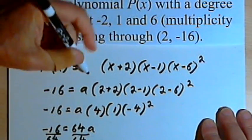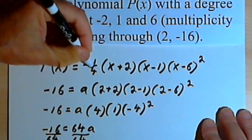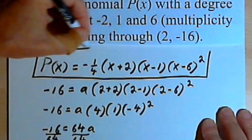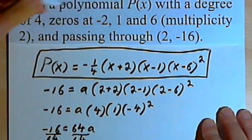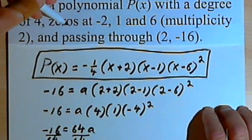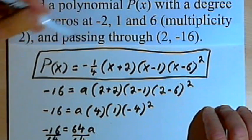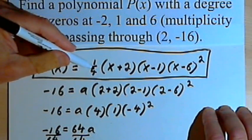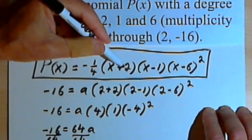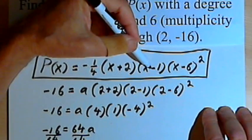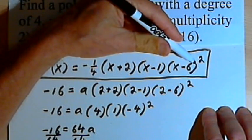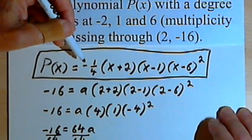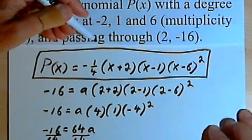Instead of a, I'll put in negative 1 quarter. So that means that the function that meets these requirements, that has these zeros and passes through this point, is going to be P(x) equals negative 1 quarter times (x plus 2) times (x minus 1) times (x minus 6) squared. And once again, if you want to, you can multiply this out. It's all a matter of what you prefer or what your teacher prefers.